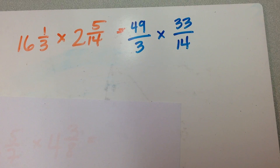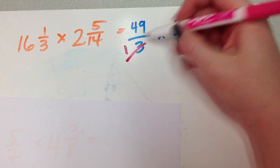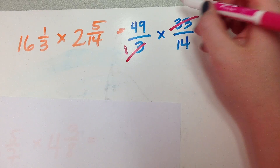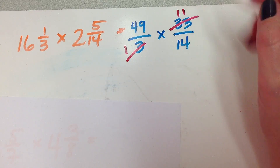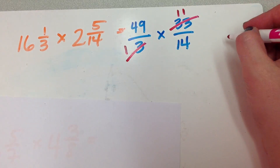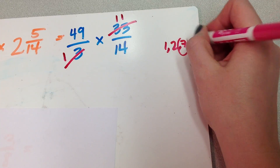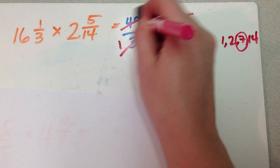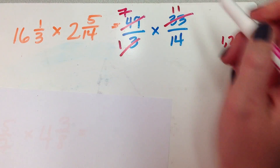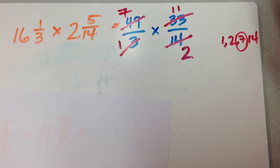Now that I've got improper fractions, I can go ahead and solve. Anything I can cross-cancel — anything at all that jumps out at you. 3 and 33: I can divide 3 out of both of these. 3 divided by 3 is 1, 33 divided by 3 is 11. How about in this other direction? What are the factors of 14? 1, 2, 7, and 14. 7 times 7 is 49, so if I divide 49 by 7, I'm left with 7. 14 divided by 7 is 2. They have a factor in common.